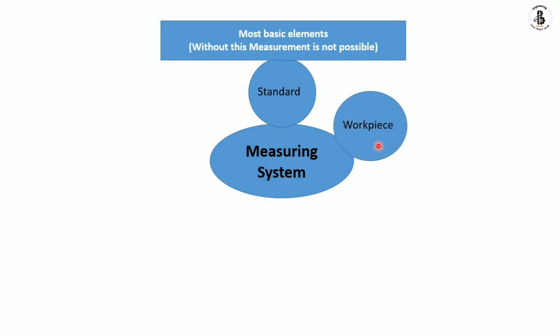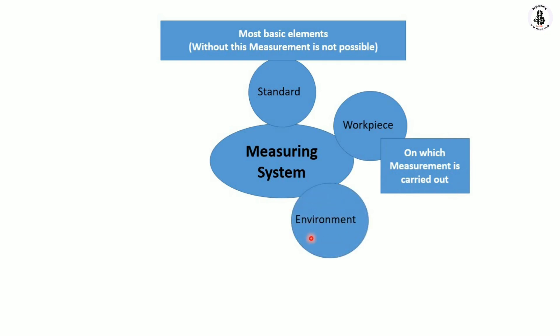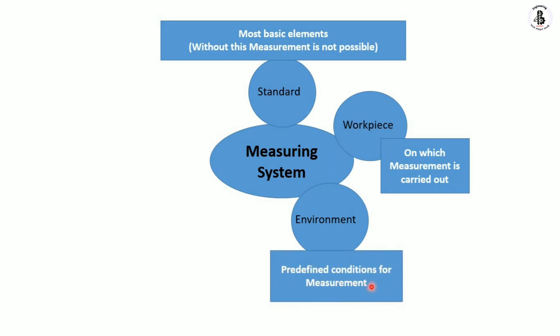The second essential element is the work piece — the product or component on which the measurement is carried out. Third is the environment, which plays a vital role. You should control your environment because it makes a difference in measurements under different conditions. Changes in temperature, pressure, and position can change your readings across different locations. For critical applications, predefined environment conditions must be maintained. Fourth is the person — the observer or operator who takes the readings and measures quantities from the system or product.